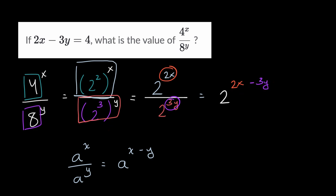Well, we just have to remember, they told us that two x minus three y is equal to four. So all of this business is equal to four. So it's two to the fourth power.